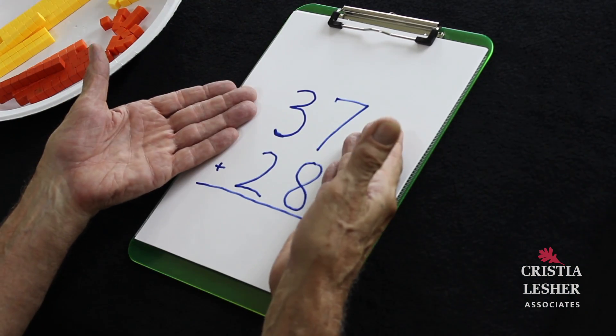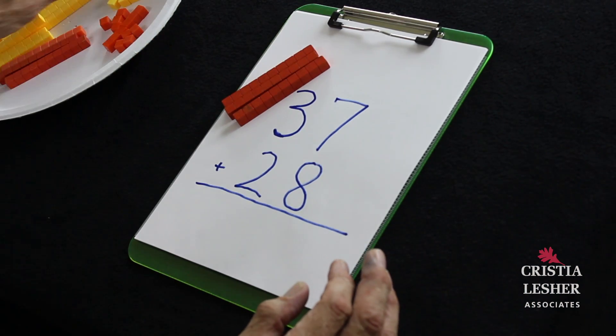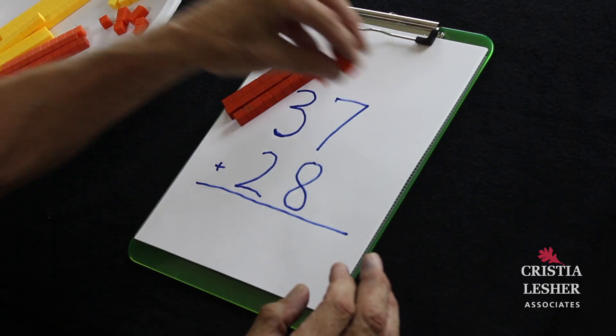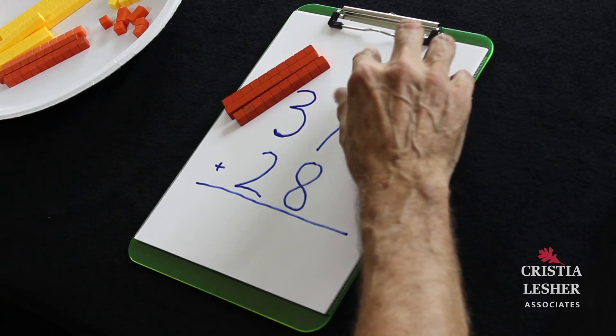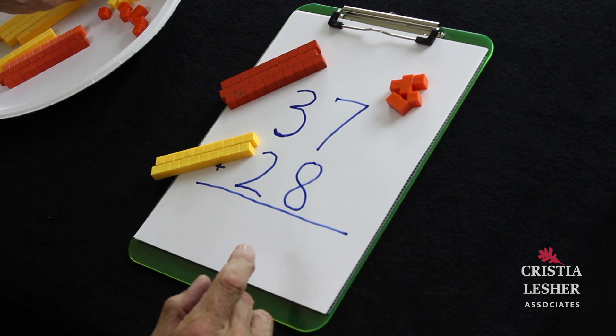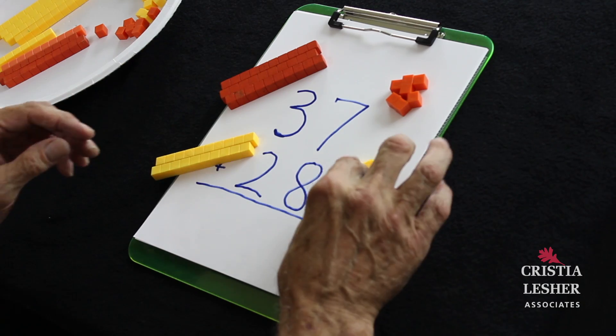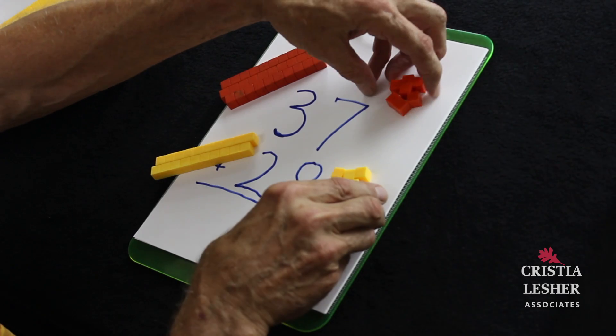Please consider this problem of 37 and 28. I'm going to get out three 10 sticks to put right next to the 30, and I'm going to get out seven ones to put right next to the digit seven. I will also model the 28 with two 10 sticks and eight ones. We're going to be modeling the traditional algorithm for addition where we start on the right and we start by adding seven plus eight. I will add them together.